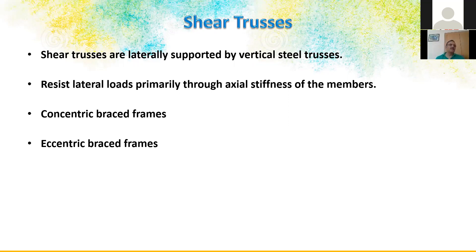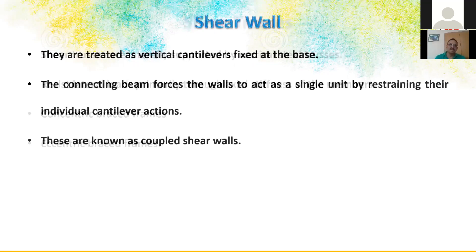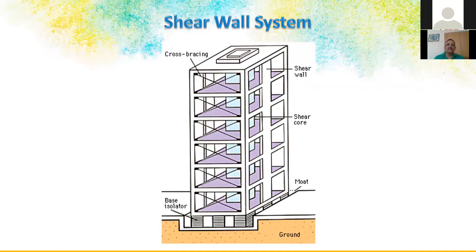IS 16700 is the tall building code in India. As an engineer, you should interpret the clauses rather than just follow them as rules. The shear wall is designed as a vertical cantilever, fixed at the base. The connecting beam forces the walls to act as a single unit by restraining their individual cantilever actions — that is the coupled shear wall concept. You can also have the central core with shear walls and bracings, including infill acting as a compression-only strut.